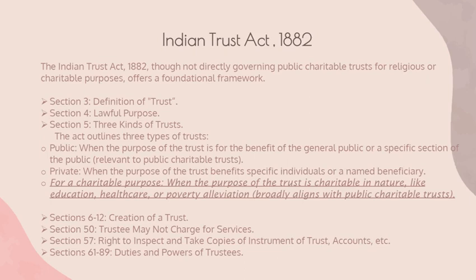Section 4 implies the lawful purpose of the trust. According to Section 5 of this Act, a trust can be of three types: public, private, and for a charitable purpose. In this, the trust for a charitable purpose focuses on endeavors such as education, healthcare, and poverty alleviation.